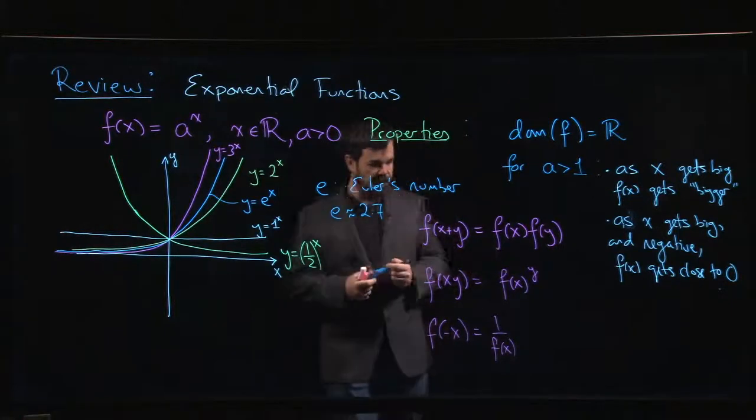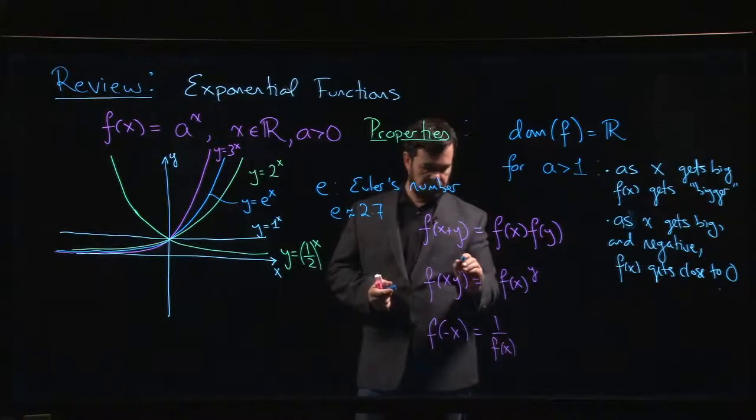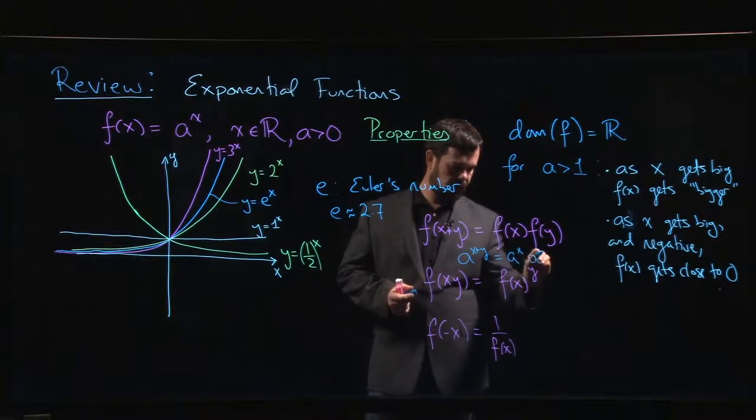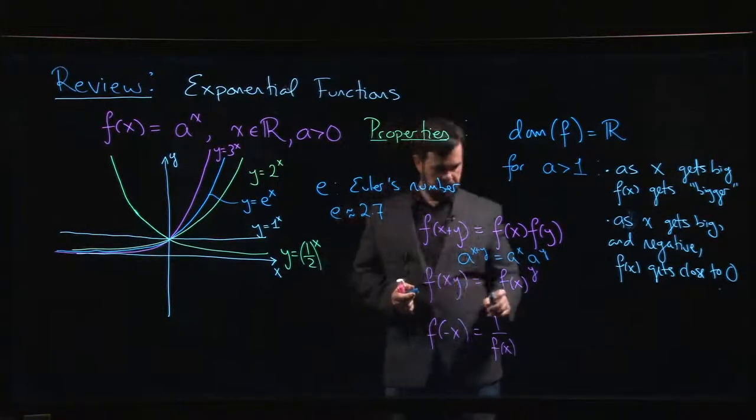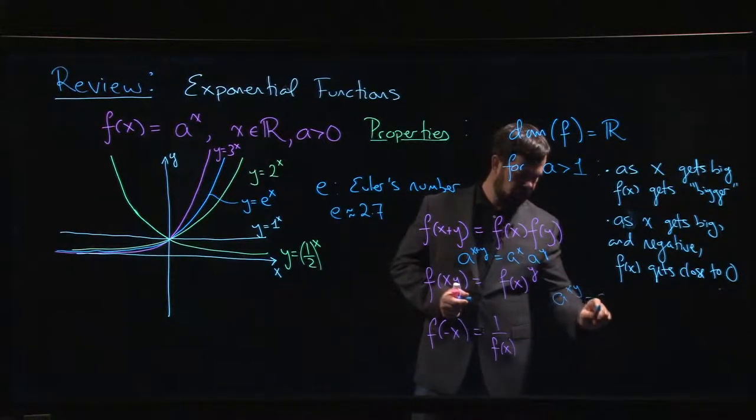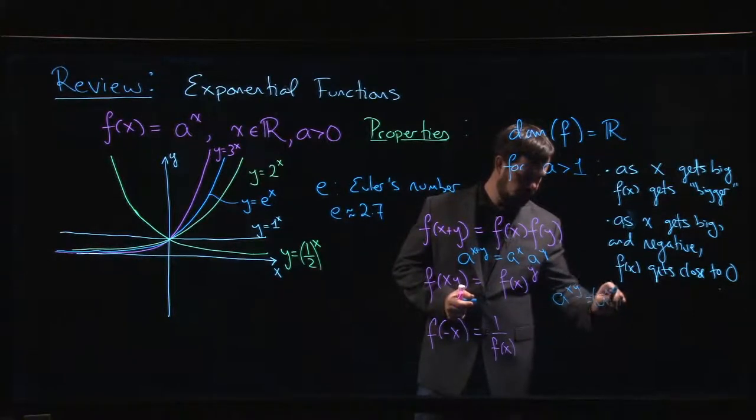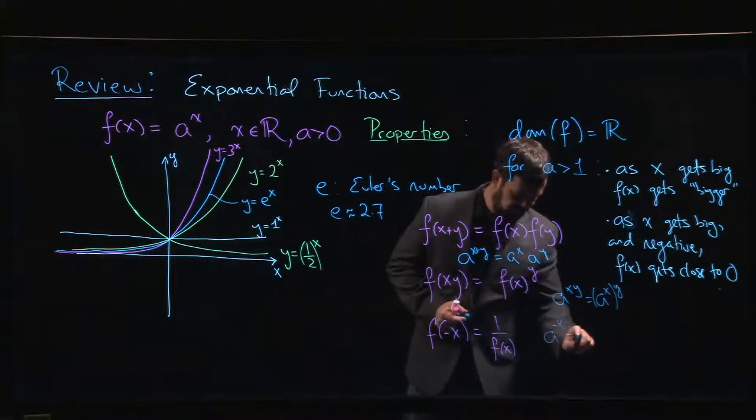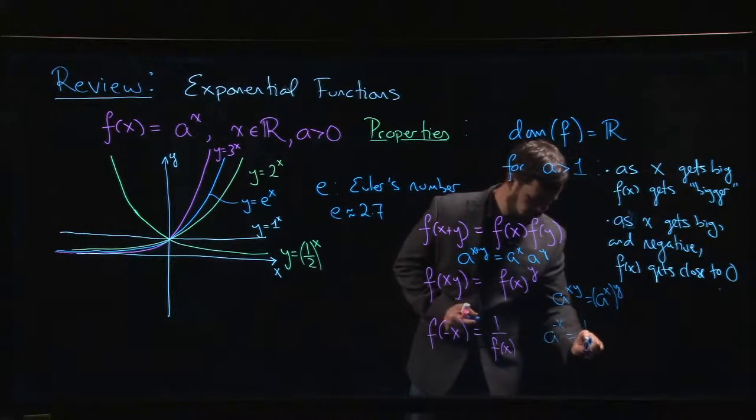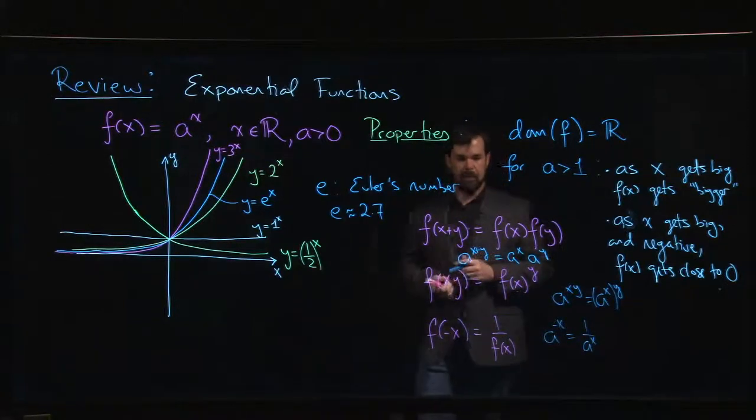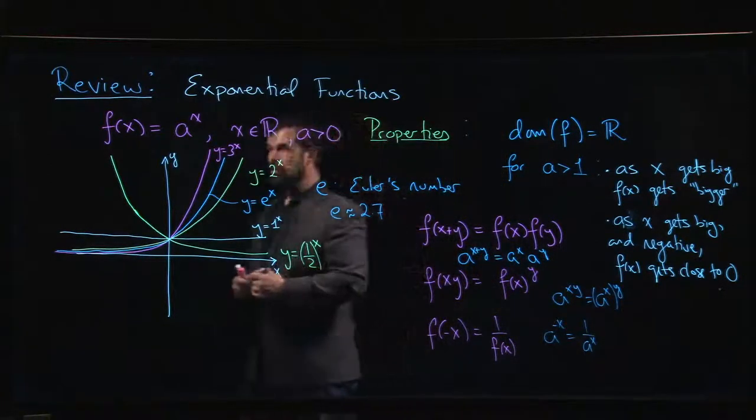This looks a little complicated in function notation, but these are just the familiar rules: a to the x plus y is a to the x times a to the y, a to the xy is the same thing as a to the x to the y, and a to the minus x is 1 over a to the x.